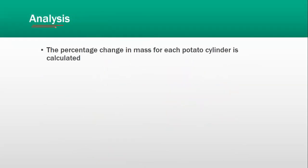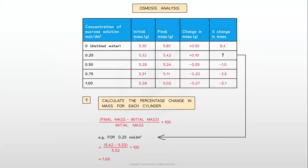If we look at the analysis, the percentage change in mass of each potato cylinder is calculated. Here you can see initial mass, the final mass of each cylinder is decreasing. This is because concentration was increasing, water potential was decreasing, so more and more water was lost from the cells. Then we can calculate the percentage change in the final mass of each cylinder.